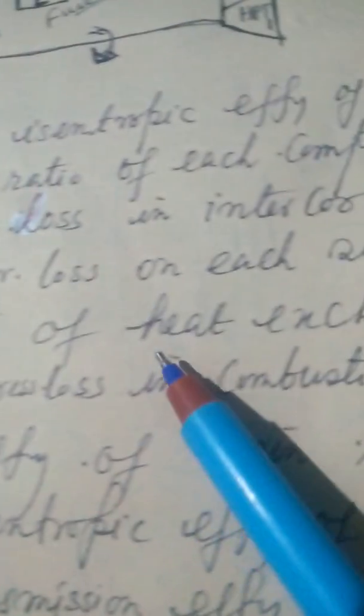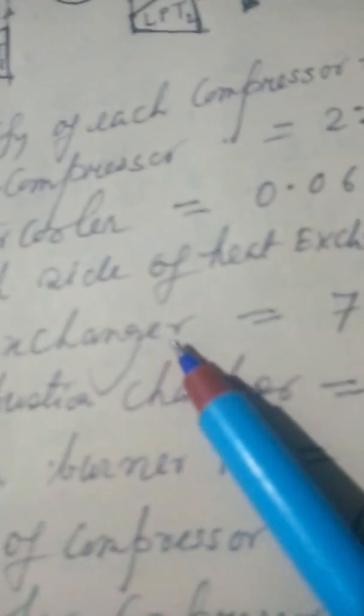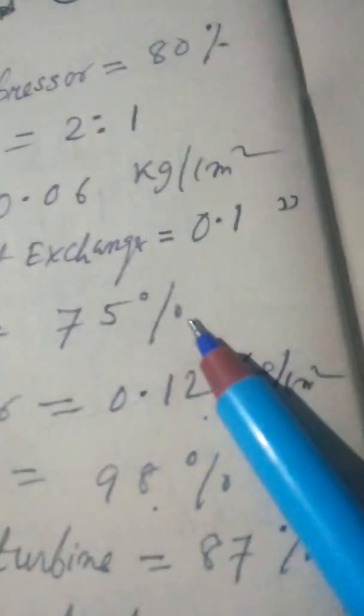Thermal ratio of heat exchanger is equal to 75%.